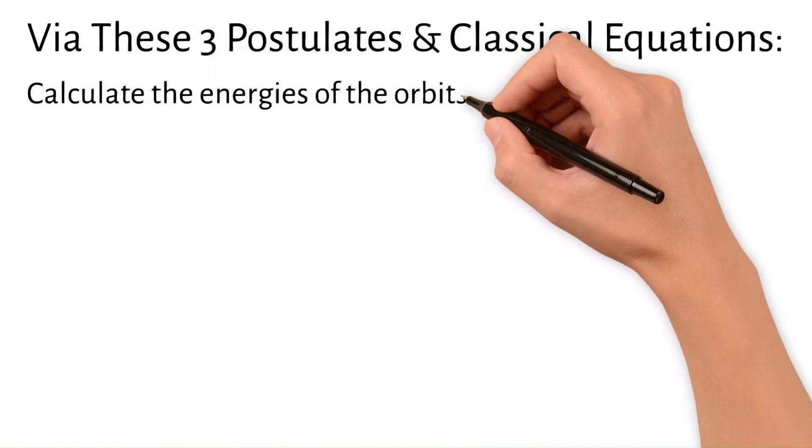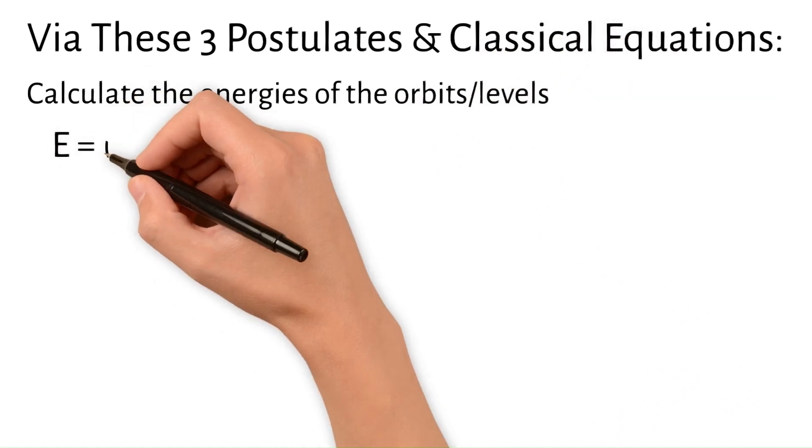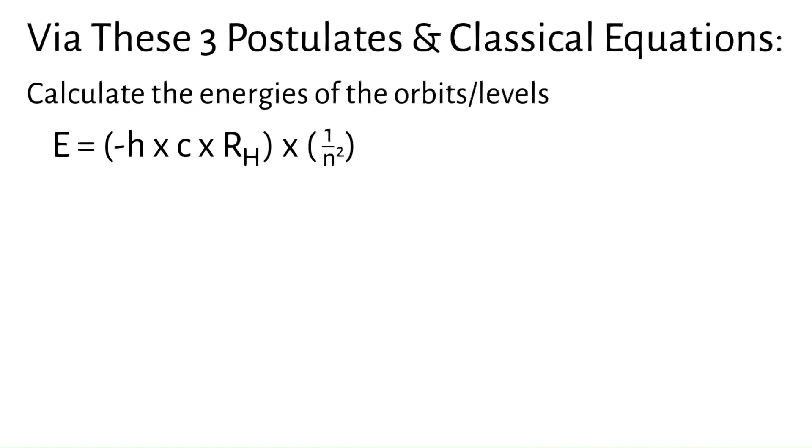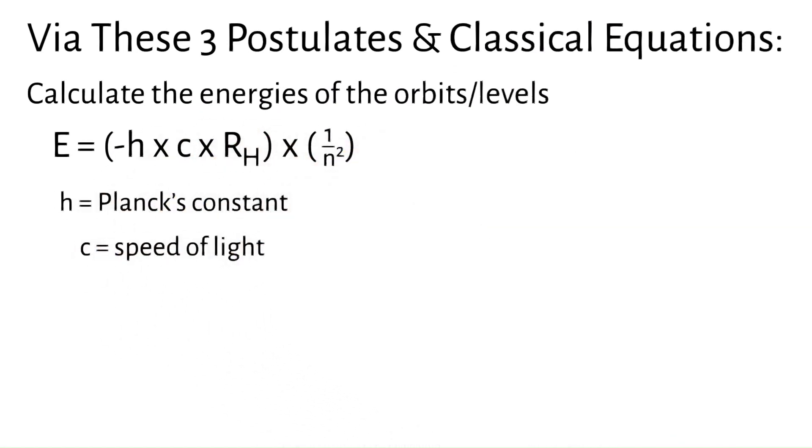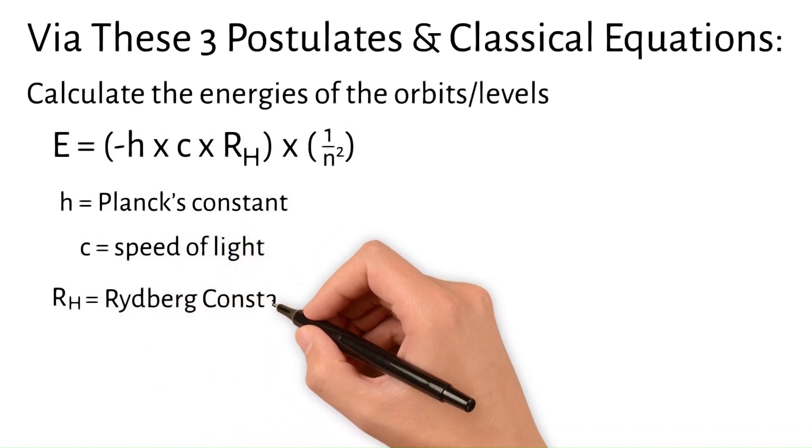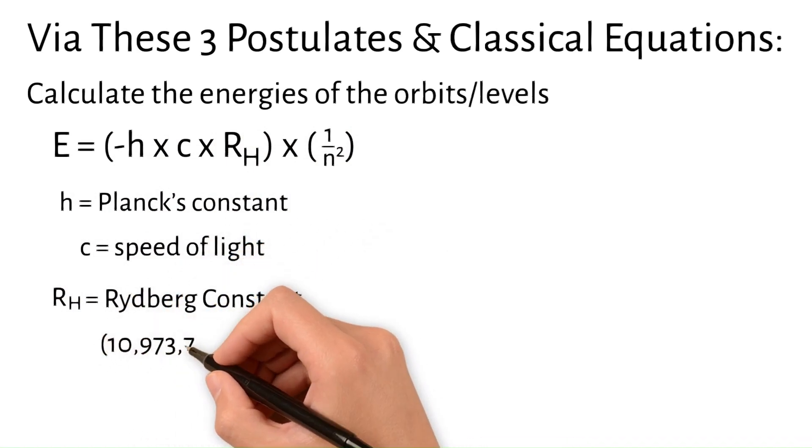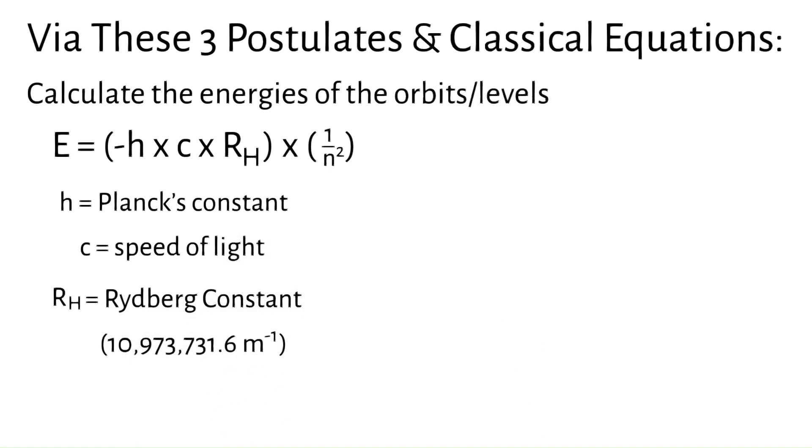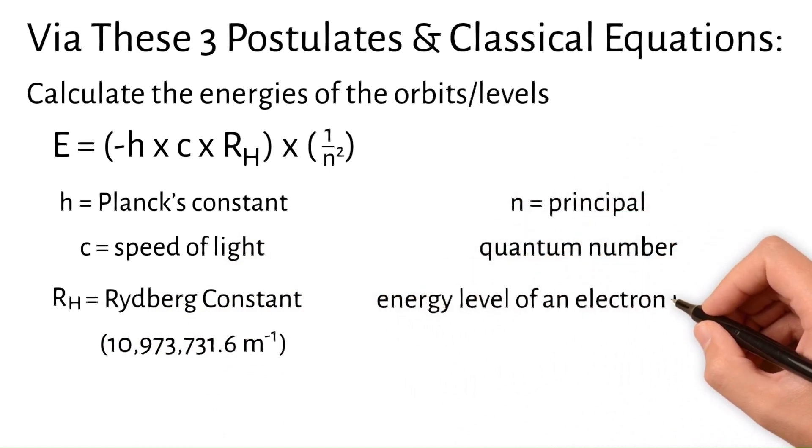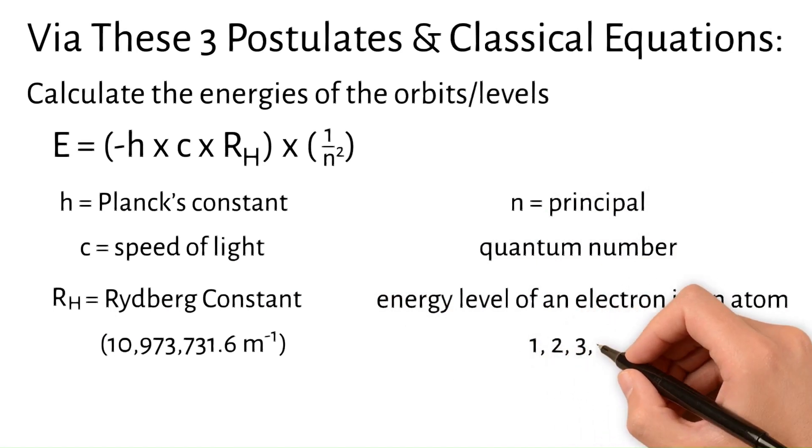Via these three postulates and using classical equations, Bohr was able to calculate the energies corresponding to these orbits or levels via his equation E equals negative h c R_H times 1 divided by n squared, where h equals Planck's constant, c equals the speed of light, R_H is the Rydberg constant, which is 10,973,731.6 per meter, and n equals the principal quantum number, which is the energy level of an electron in an atom and relates to the whole number values of 1, 2, 3, etc.